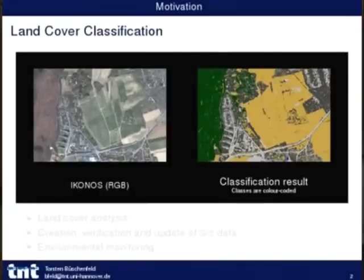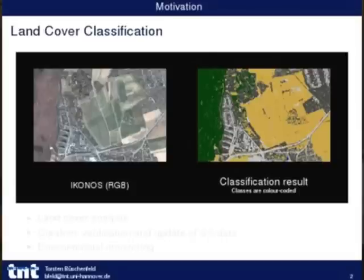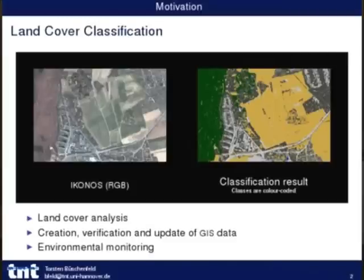Typically when you are working with land cover classification, you want to have something like this. You have a scene from remote sensing data — here is the IKONOS image with RGB channels displayed — and you want a classification result that is a mapping of the meaning of certain areas, pixels, regions, or segments, to labels representing class membership. Here green would be forest, ochre for cropland or grassland, and different shades of grey for different sizes of building structures. This is done by a pixel-wise classification with a support vector machine.